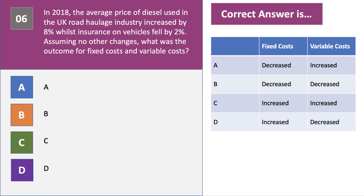Question 6 is testing your understanding of fixed and variable costs. Insurance is a fixed cost; diesel is a variable cost. So the answer is A — fixed costs have fallen and variable costs have increased.